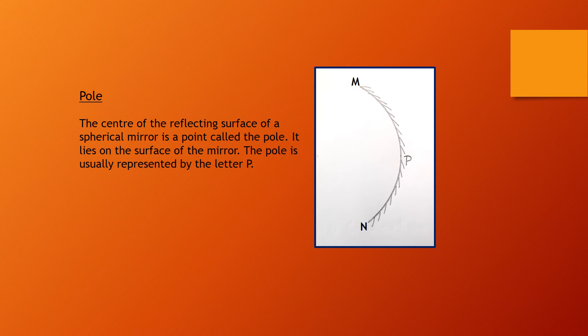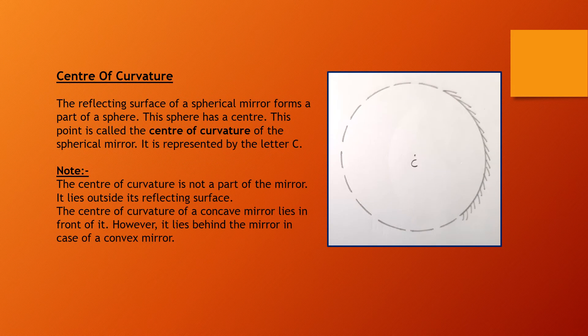Centre of curvature: the reflecting surface of a spherical mirror forms a part of a sphere. This sphere has a center, which is called the center of curvature of the spherical mirror, represented by the letter C. Note that the center of curvature is not a part of the mirror — it lies outside its reflecting surface.